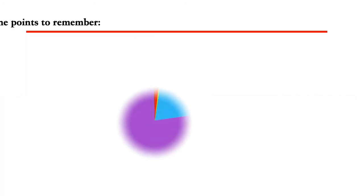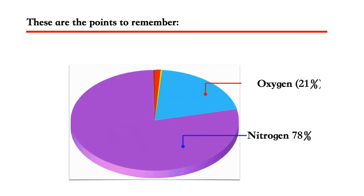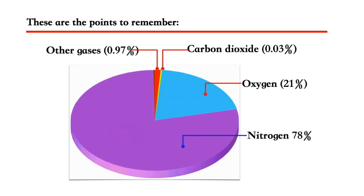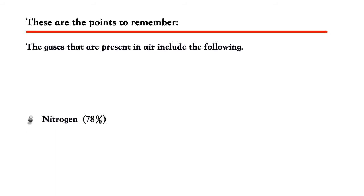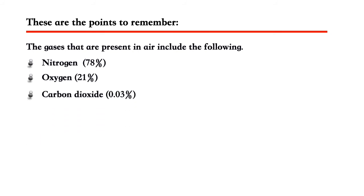These are the points to remember. The gases that are present in air include the following: Nitrogen, 78%. Oxygen, 21%.